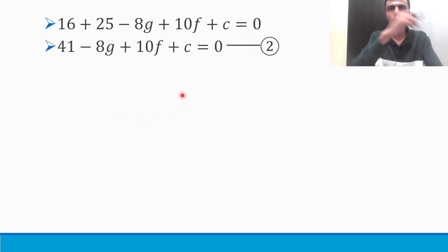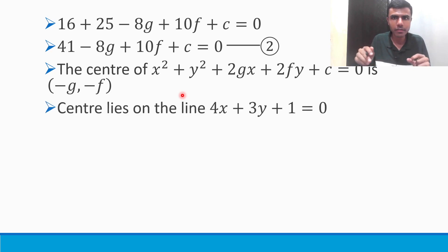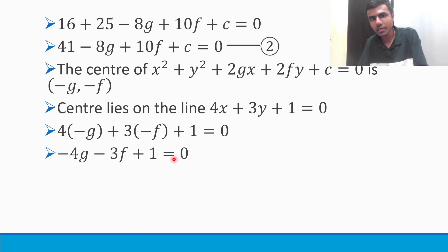Now how to get the third equation? There are three variables, so I need three equations. Very simple. They have said that the center lies on some line. What is the center of our circle? Our circle is this and its center is (-g, -f). Now they are telling that this center lies on 4x + 3y + 1 = 0. That means basically our center (-g, -f) lies on 4x + 3y + 1 = 0. So this point lies on this line. Just substitute it. So 4(-g) + 3(-f) + 1 = 0. -4g - 3f + 1 = 0.